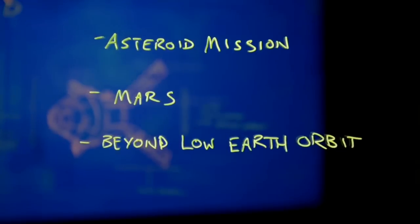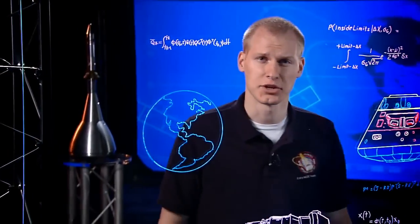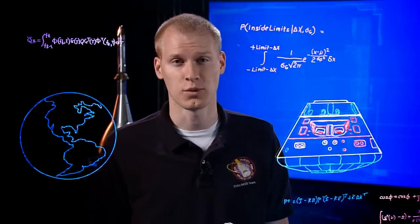For these missions, Orion has to be one tough spacecraft, withstanding high speeds, searing temperatures, and extreme radiation. Before we can send astronauts into space on Orion, we have to test all of its systems. And there's only one way to know if we got it right: fly it in space.